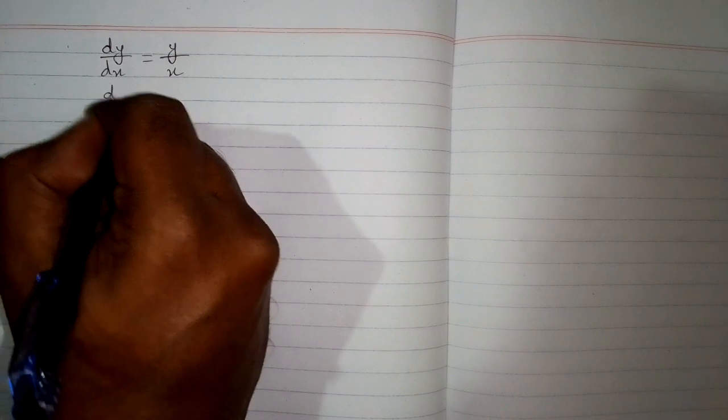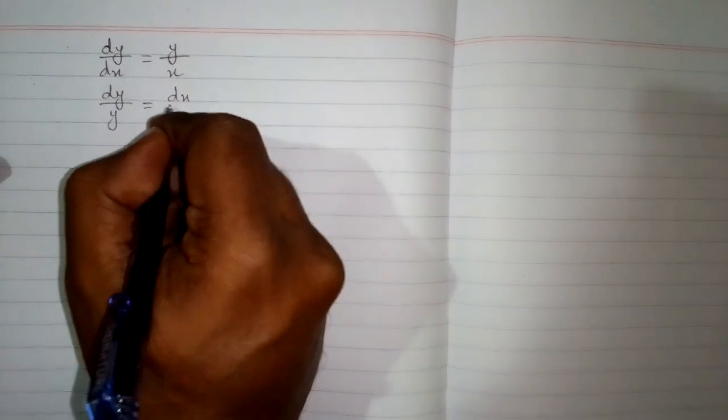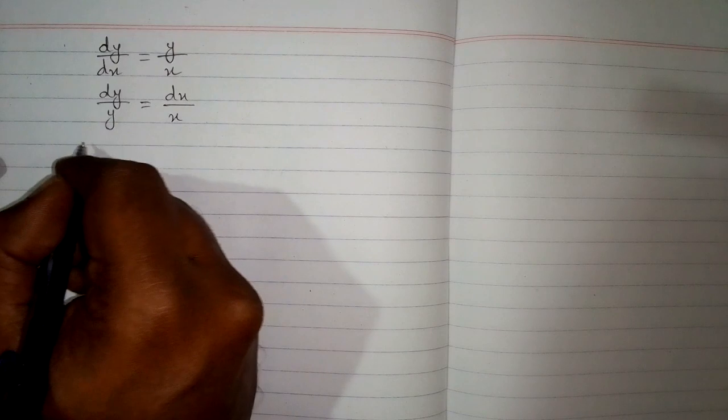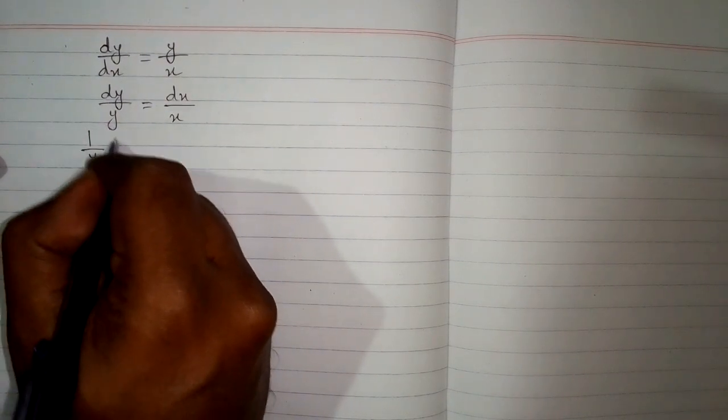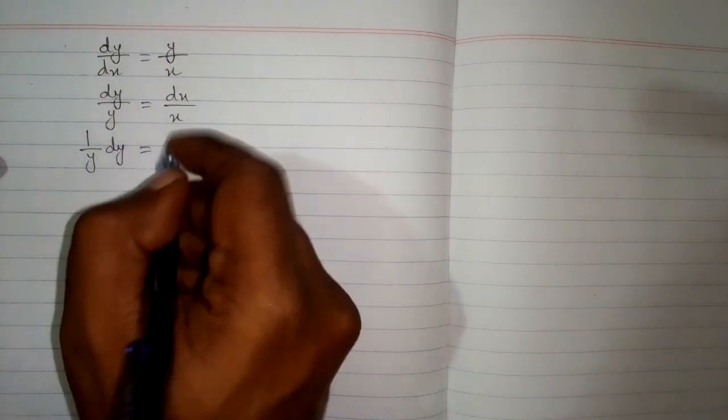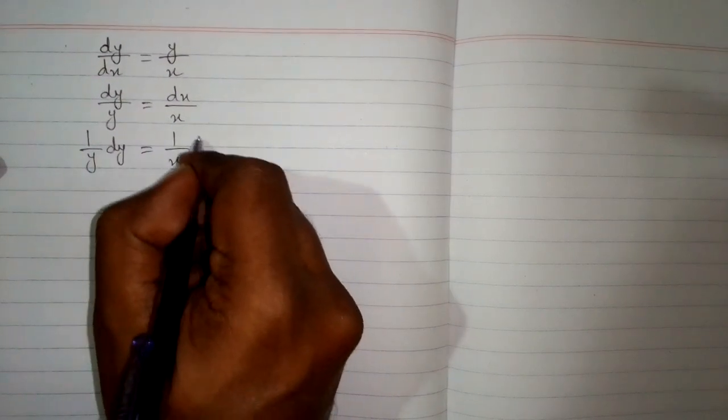So this equation can be written as dy upon y is equal to dx upon x by cross multiplication. And now this differential equation is a separable differential equation because the coefficient of dy is 1 upon y and the coefficient of dx is 1 upon x.